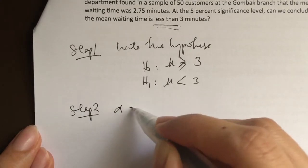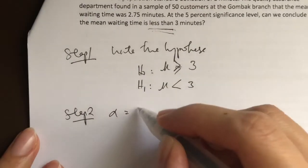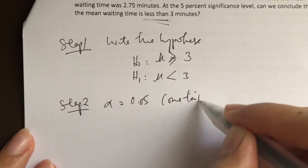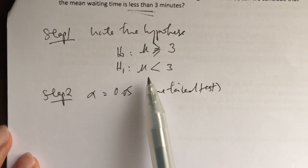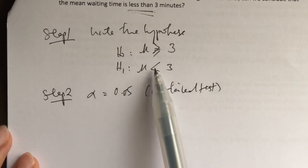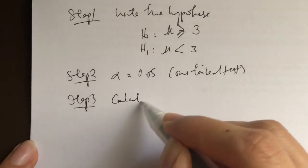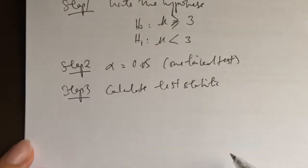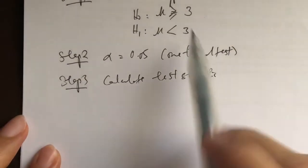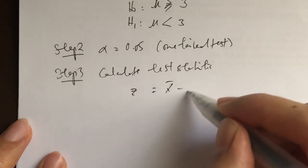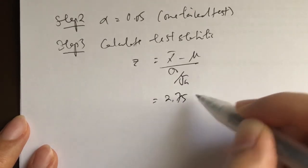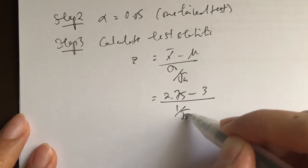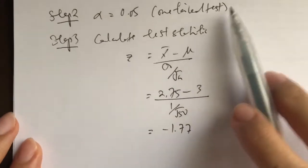Step 2: write down alpha. Again, it's 5%, alpha equals 0.05. This is a one-tailed test — the sign for the alternate hypothesis points to a particular direction (less than). Step 3: calculate the test statistic. Is it any different? No, it's the same. Z equals x-bar minus mu over sigma over the square root of N: 2.75 minus 3 over 1 over the square root of 50. We get minus 1.77 again.